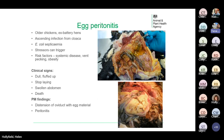Egg peritonitis — this also includes salpingitis and impaction of the oviduct and is the most common cause of sporadic mortality in smallholder chickens. It generally affects older birds, particularly ex-battery hens, who are predisposed to the condition due to previous damage to the oviduct.